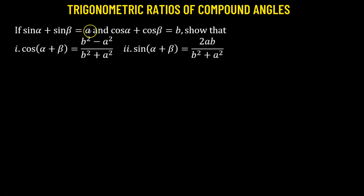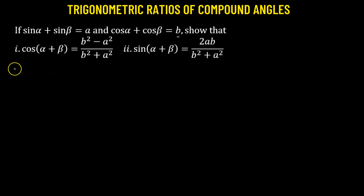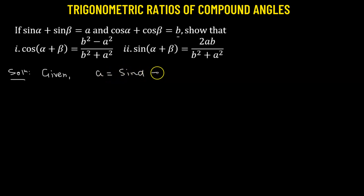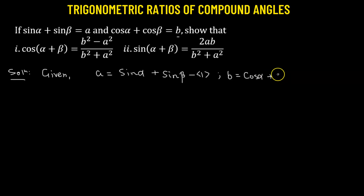In this problem we are given the value of a, which is given by sine alpha plus sine beta, and b is given by the sum of cosine alpha and cosine beta. Using this fact we need to show that equation 1 and equation 2 both hold true. Let's state what we have been provided with: a = sin α + sin β (equation 1), and b = cos α + cos β (equation 2).